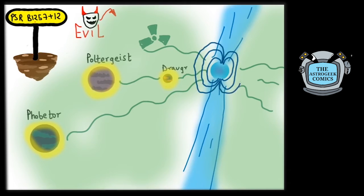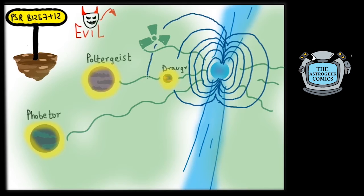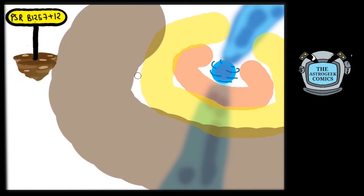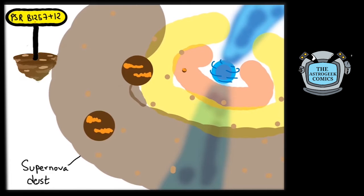And how these planets survived the supernova that created the pulsar is a mystery. One theory says that they were formed after the formation of the pulsar from the remaining supernova dust. No, you will not turn into Hulk or Spider-Man over here.